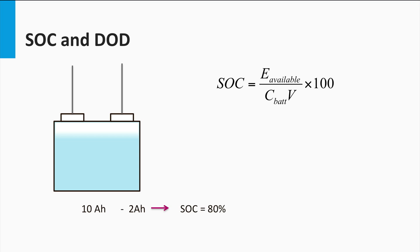Then we also have the depth of discharge or DOD. Depth of discharge is defined as the percentage of the battery capacity that has been discharged. Thus a 10 Ah battery that has been drained by 2 Ah has a depth of discharge of 20%. Thus the depth of discharge and the state of charge can be seen as complementary to each other.